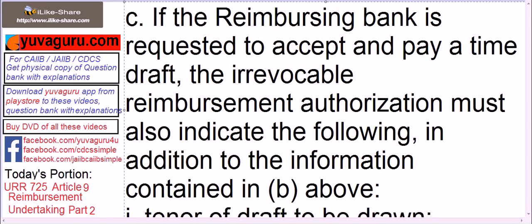We are on point C right now. If the reimbursing bank is requested to accept and pay a time draft, the Irrevocable Reimbursement Authorization (IRA) must also indicate the following, in addition to the information contained in B above - those terms stated in B are needed, plus these following additional terms.